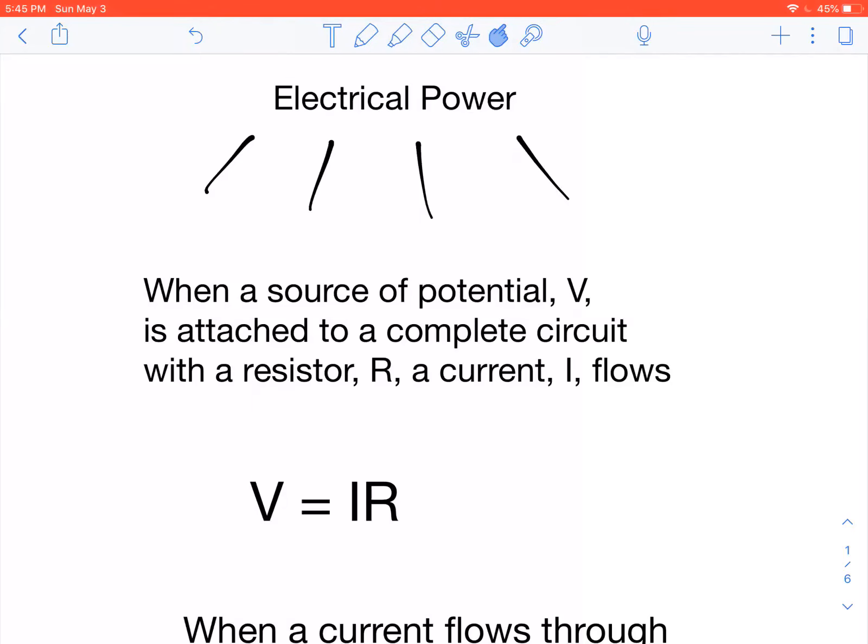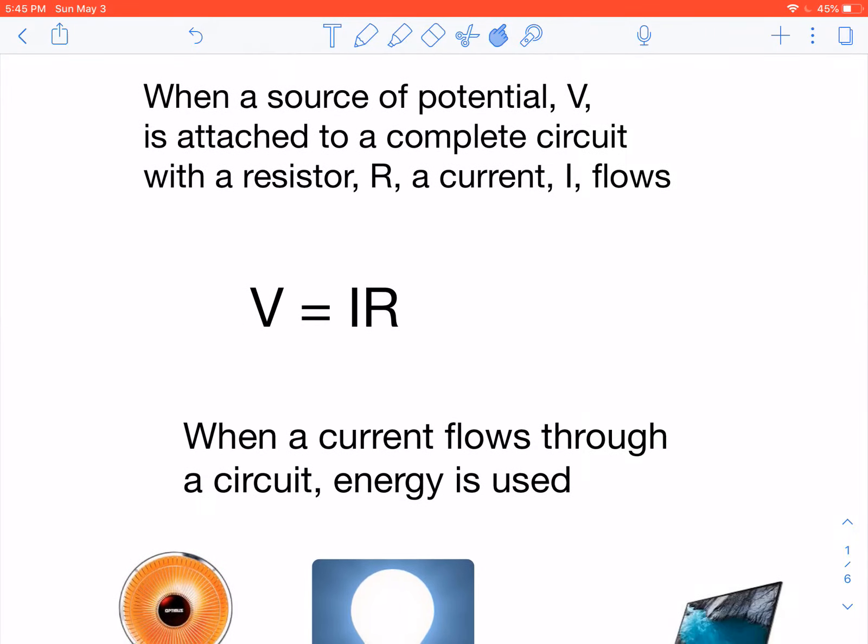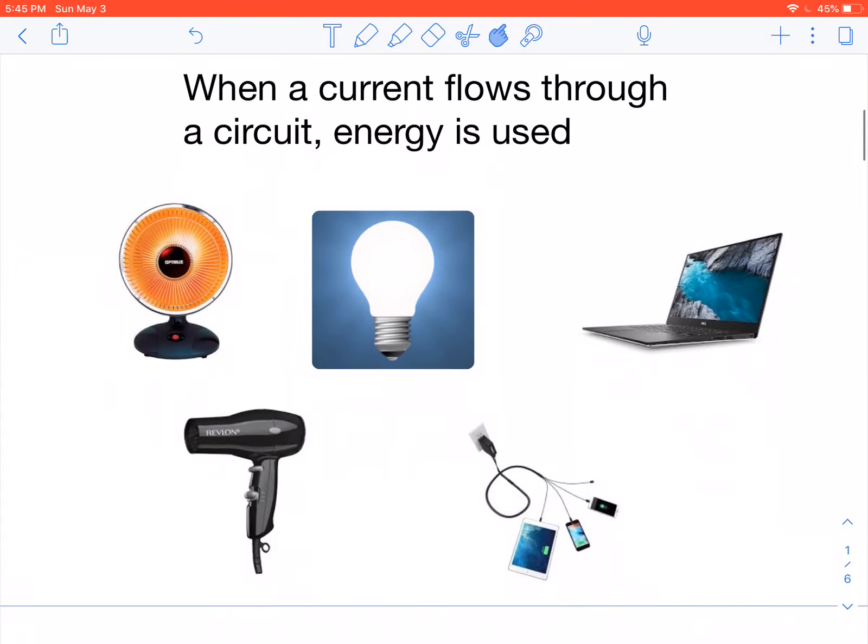Now we're going to talk about electrical power. When a source of potential, V, is attached to a complete circuit with a resistor R, a current I will flow. This is the formula Ohm's law, V equals IR. Now when a current is flowing through a circuit, energy is used.